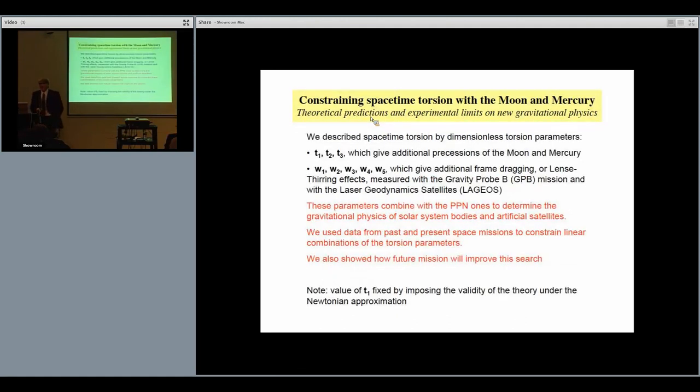The theory has several parameters. It's a complex theory. There are three parameters t1, t2, and t3 which describe additional precessions to the orbits of the Moon and Mercury, and there are five additional parameters which describe additional frame dragging of bodies like the laser geodynamic satellites. These parameters combined with the PPN parameters describe the motion of the Moon, Mercury, and artificial satellites. We have used the data from past and present experiments to put constraints on these parameters to see if nature has chosen to add torsion in space-time in addition to curvature.